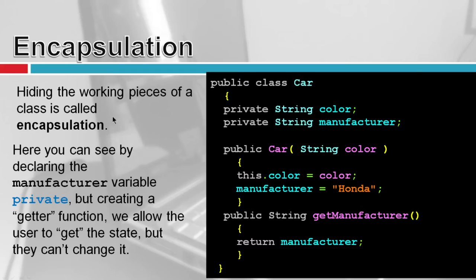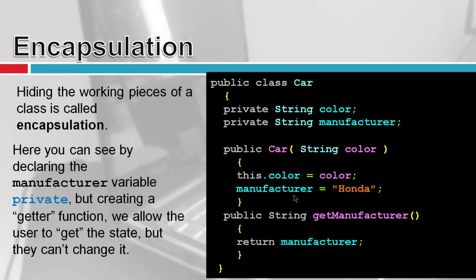Encapsulation: hiding the working pieces of a class. By declaring the manufacturer variable private but creating a getter function, we allow the user to get the state but they can't change it. Say I'm a Honda employee — I set manufacturer to Honda and I don't want someone changing it to Toyota. I've made that string private. However, I want the person using my class to read what manufacturer it is, so I've got this getter function. You'll hear the terms getters and setters: if I want the user to set a value, I create a setter; if I want them to get the value, I create a getter.